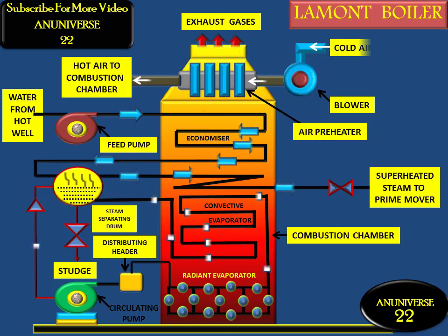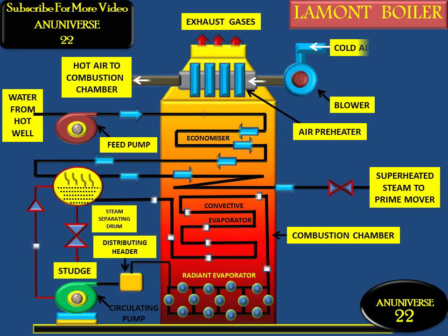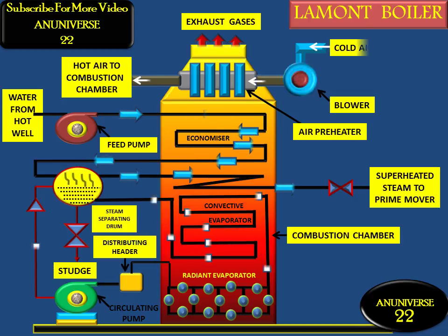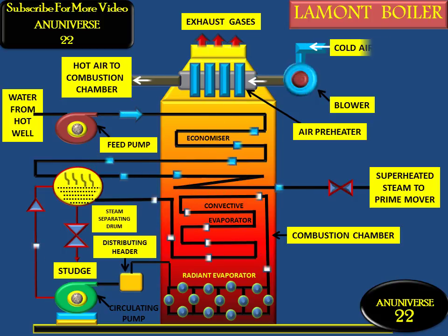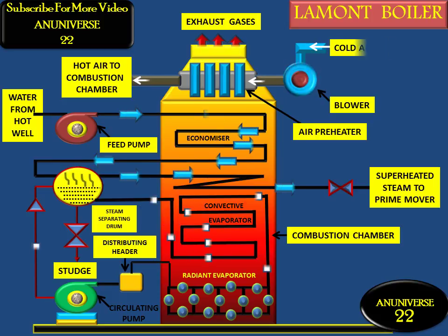The working pressure of this boiler is above 170 bar, and it has a steam generation capacity of about 50,000 kg per hour at a temperature of 773 Kelvin. Today we learned about the components and working of the LaMont boiler.